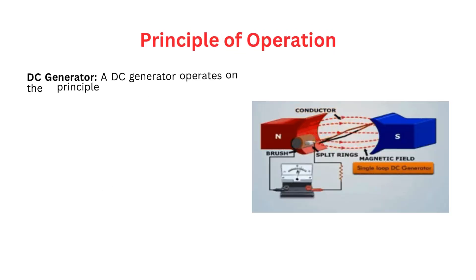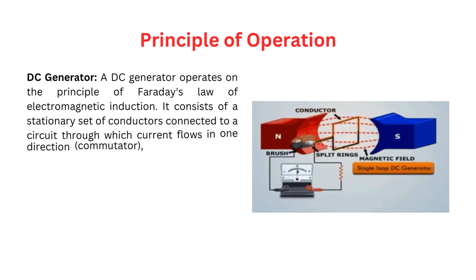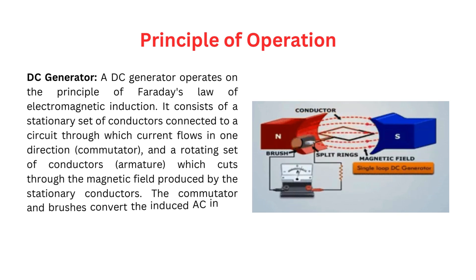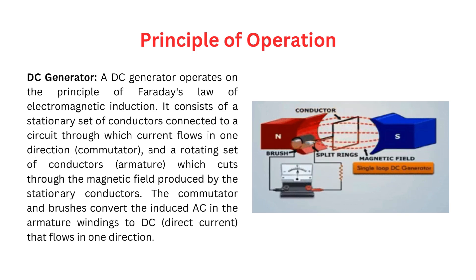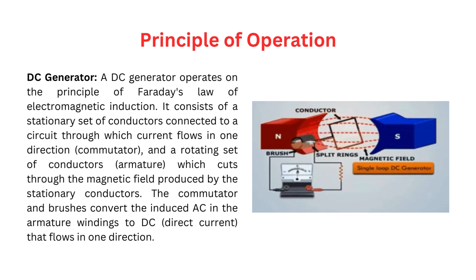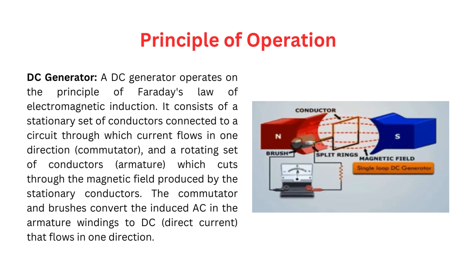DC generator. A DC generator operates on the principle of Faraday's Law of Electromagnetic Induction. It consists of a stationary set of conductors connected to a circuit through which current flows in one direction, called the commutator, and a rotating set of conductors, called the armature, which cuts through the magnetic field. The commutator and brushes convert the induced AC in the armature windings to DC, direct current, that flows in one direction.